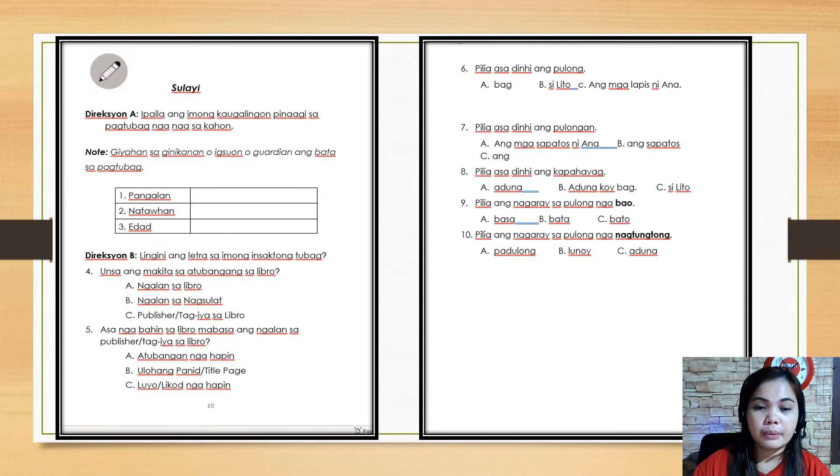We have started this a while ago and I will translate it again. Lai means try. Direction A: this is introduction, self introduction. Pangalan means name. So you're going to write your name here in the box.